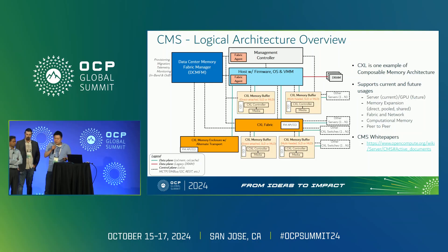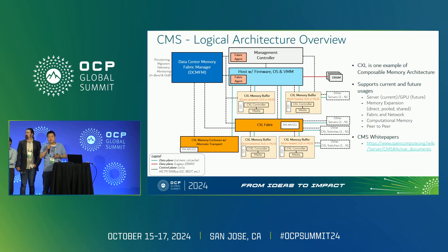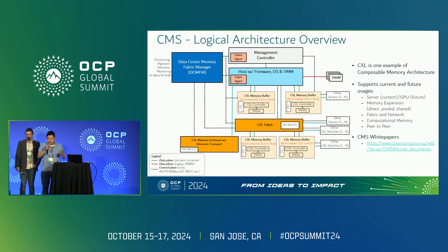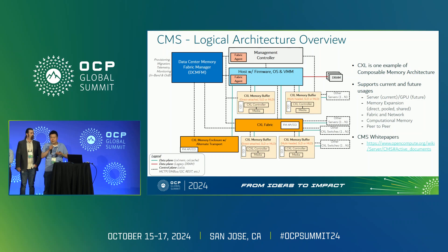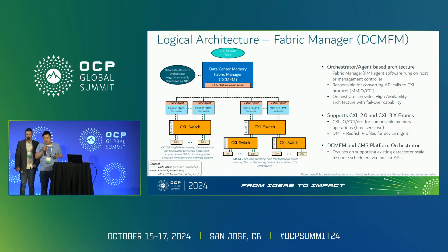CXL is a well-recognized interconnect for composable memory architecture with current and future expected usages. Higher-level hosts with the host operating system and virtual machine manager essentially consume local DRAM and remote CXL direct-attached and multi-headed memory. Last but not least, the data center memory fabric manager stitches all of these pieces together and works with the orchestrator to provision and deprovision memory. You can find more in the OCP CMS white papers.